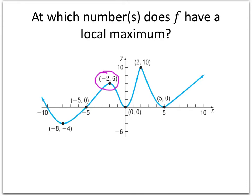And we see one high point here at negative 2 comma 6. And we see another high point up here at 2 comma 10. So when we say at which numbers, once again we're referring to the x values. So the answer to our question would be x equals negative 2 and x equals positive 2. We're not referring to the y values. The y values help us figure out where the local maxima are, but the answer to the question is the x values of those points. So we're looking at negative 2 and positive 2.